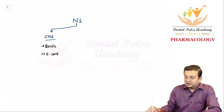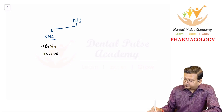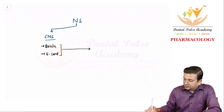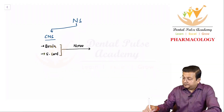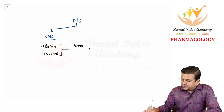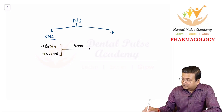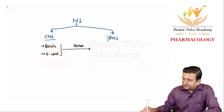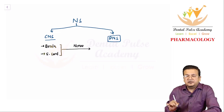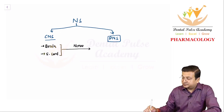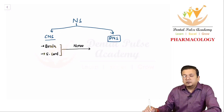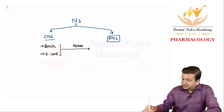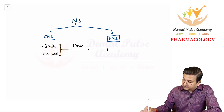From the brain and spinal cord, nerves come out. These nerves constitute the other part of the nervous system called the peripheral nervous system. So central and peripheral are the two parts of the nervous system. The central nervous system is made up of the brain and spinal cord, and nerves coming out constitute the peripheral nervous system.